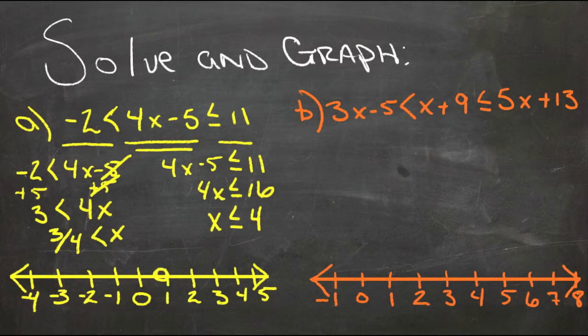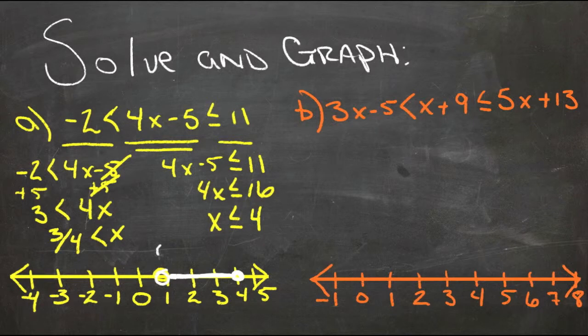Actually let's do this in a different color, let's do that in white. So it's greater than 3 quarters, open circle, but less than or equal to 4, solid circle, and everything in between. So an open circle at 3 quarters, a solid circle at 4, and everything in between. A little easier to see above there.